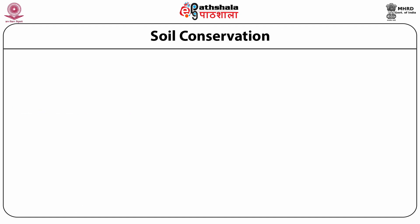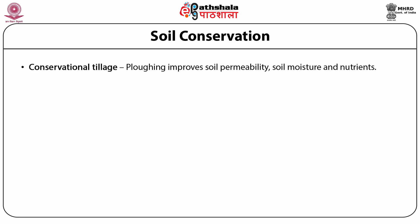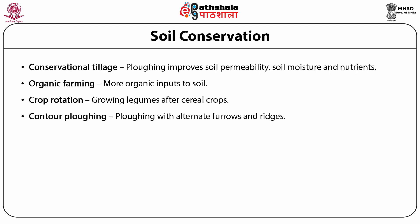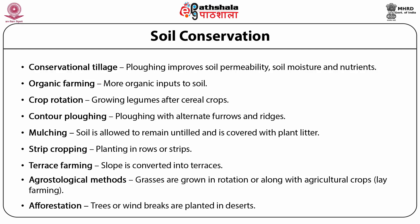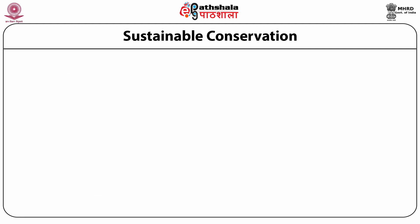Soil conservation is also a very important part of natural resource conservation because soil is the supporting medium for all plants and associated living organisms. Soil conservation involves conservational tillage, improving soil permeability, soil moisture and nutrient, organic farming and crop rotation, contour ploughing, mulching, strip cropping, terrace farming, agrostological methods and afforestation. These different conservation methods help in conserving and protecting the soil from degradation, and biotechnology also plays an important role in soil and natural resource conservation.